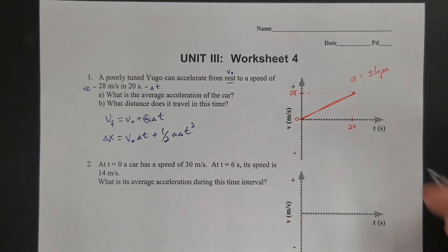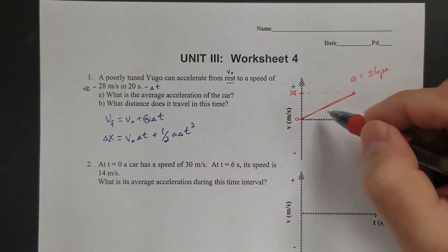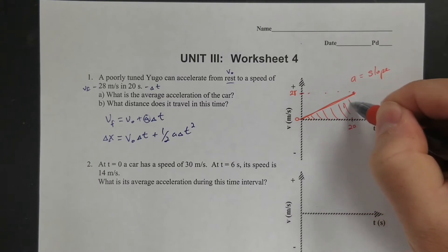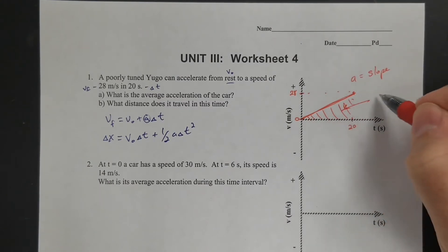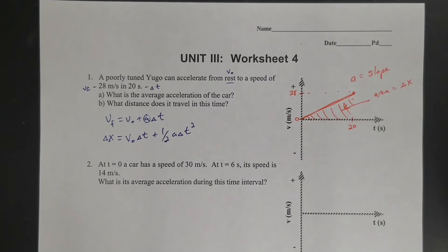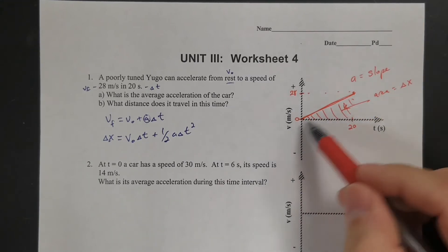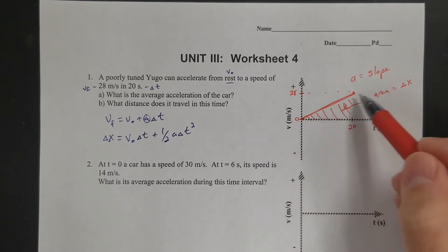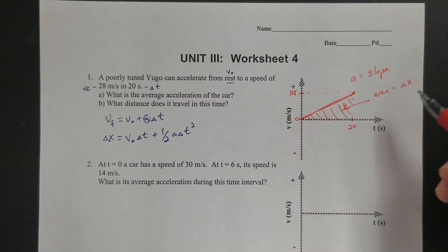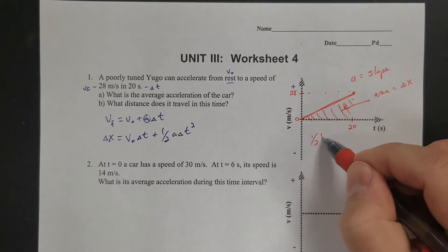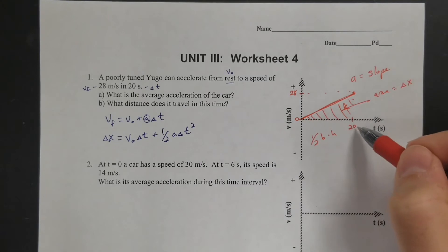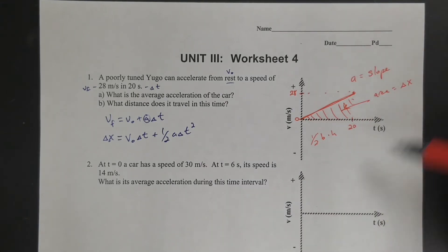But again, graph, easier. If you graph this, we know that the area bound here, that integral, the area is equal to the displacement. So slope gives me acceleration, and the area will give me the displacement. So if I want the displacement, all I have to do is find the area of that triangle. So it's one half base times height. For any triangle, it's one half base times height. So my base is 20, and my height is 28, and if you solve it either way, you should get the same answer.